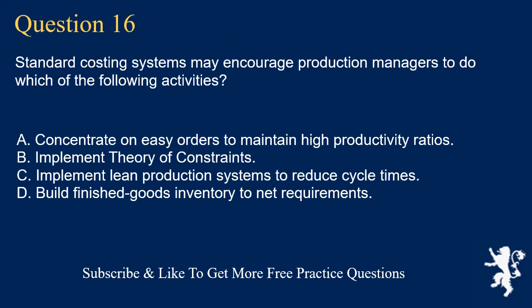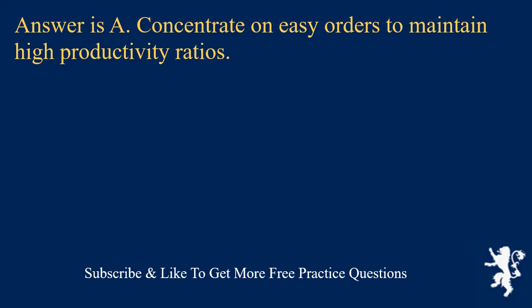Question 16. Standard costing systems may encourage production managers to do which of the following activities? A. Concentrate on easy orders to maintain high productivity ratios. B. Implement theory of constraints. C. Implement lean production systems to reduce cycle times. D. Build finished goods inventory to net requirements. Answer is A. Concentrate on easy orders to maintain high productivity ratios.